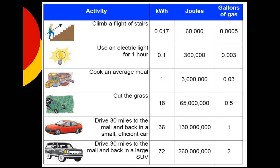This particular slide shows those different ways that we use energy and how many kilowatt hours, joules, and gallons of gas each activity requires. For instance, to climb a flight of stairs is 0.017 kilowatt hours and 0.0005 gallons of gas. On the other hand, at the bottom of the chart, to drive 30 miles to the mall and back in a large SUV is about 72 kilowatt hours and takes about two gallons of gas.